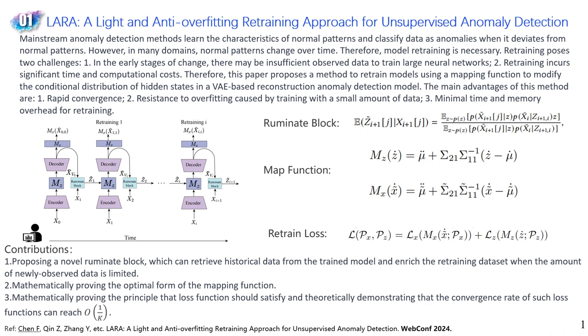Therefore, this paper proposes a method to retrain models using a mapping function to modify the conditional distribution of latent states in a VAE-based reconstruction anomaly detection model.